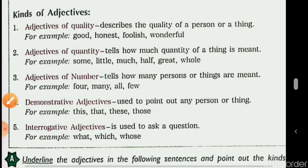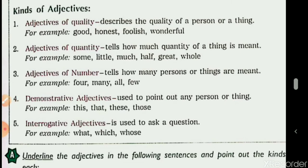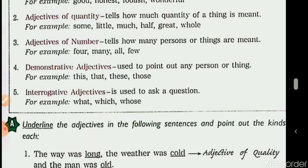To summarize the five kinds of adjectives: First, adjective of quality — tells us about quality, age, size, color, shape, feelings of a person, place, or thing. Second, adjective of quantity — tells how much, answers 'how much.' Third, adjective of number — describes number of nouns, answers 'how many.' Fourth, demonstrative adjective — points to exact person or thing; words are this, that, these, those. Fifth, interrogative adjective — question words what, which, whose used as adjectives along with nouns.